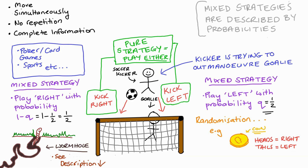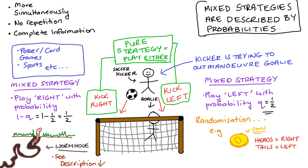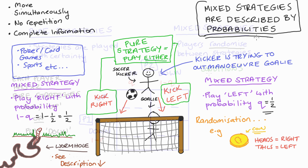When thinking about mixed strategies, the choice being made by our players is the choice of what probability to play each of their possible pure strategies. When we describe a mixed strategy, we're just describing the list of probabilities that a player associates with each of their possible pure strategies.